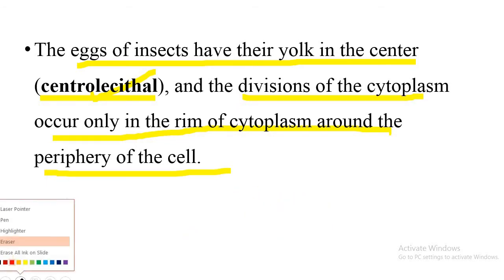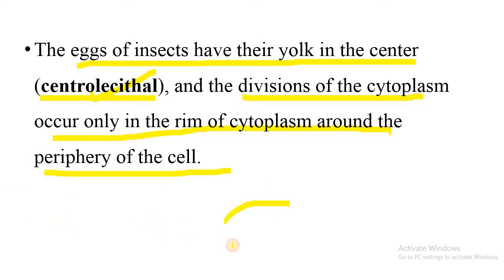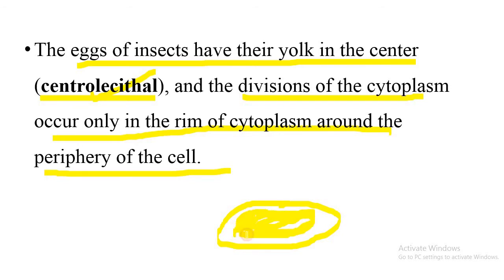In the case of a centrolecithal egg — usually elongated in insects — yolk is present in the center. This is the cytoplasmic ring present in the periphery. The divisions of the cytoplasm occur only in the rim of the cytoplasm, only around the periphery of the cell.